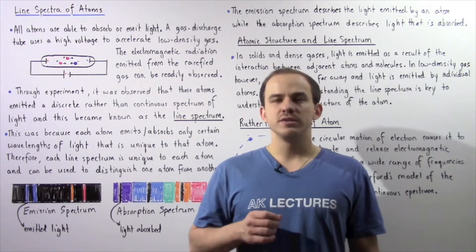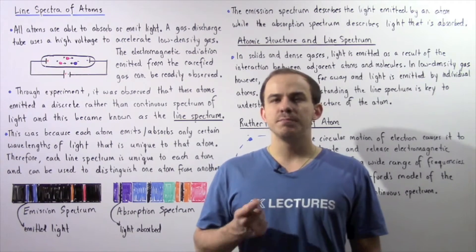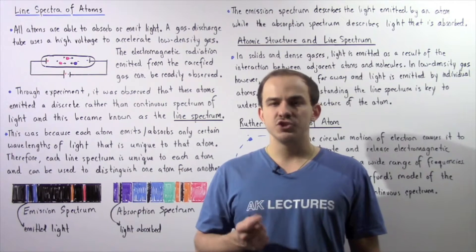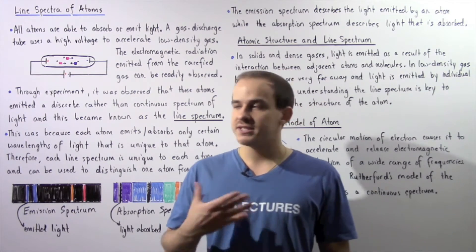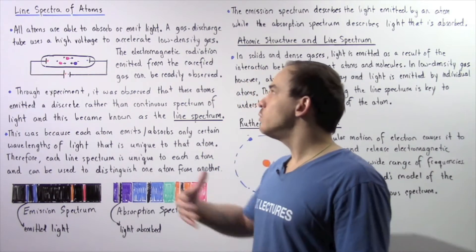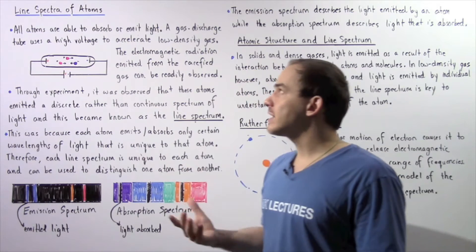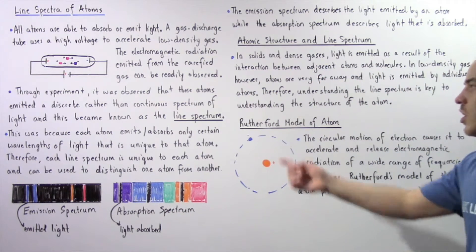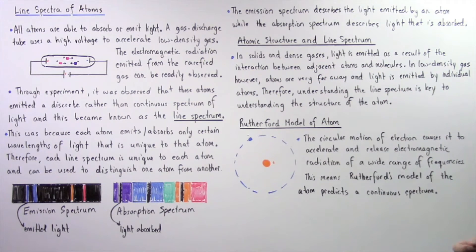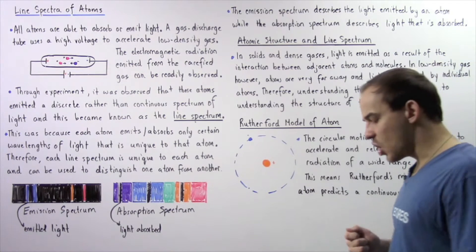In this lecture, we're going to examine line spectra that are produced by individual atoms. And then we're going to see how we can use the line spectra of atoms to basically disprove Rutherford's model of the atom.